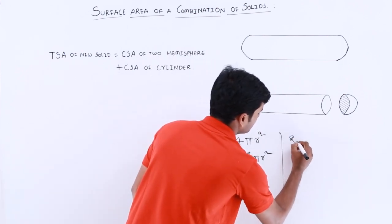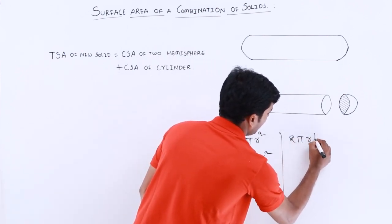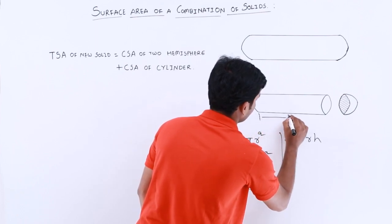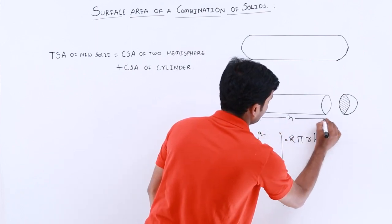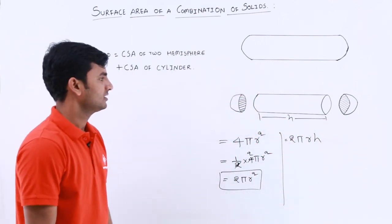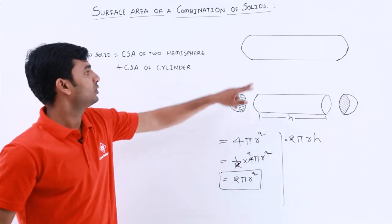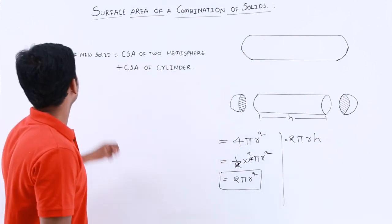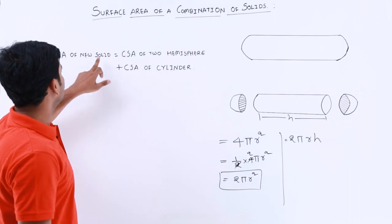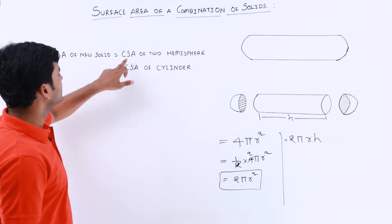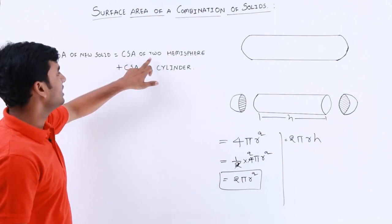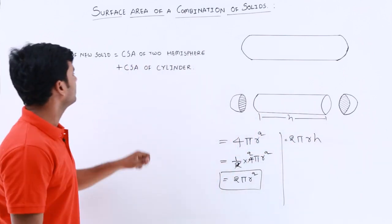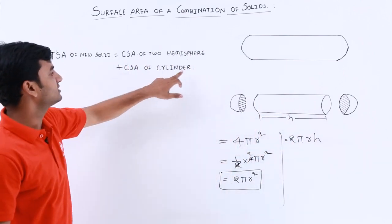For the cylinder, the curved surface area is 2πrh, where h is the complete height of the cylinder. So if we want to find out the total surface area of this solid, the formula will be: total surface area of the new solid equals the curved surface area of the 2 hemispheres plus the curved surface area of the cylinder.